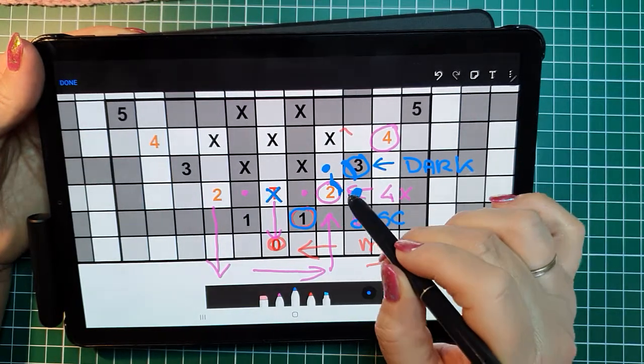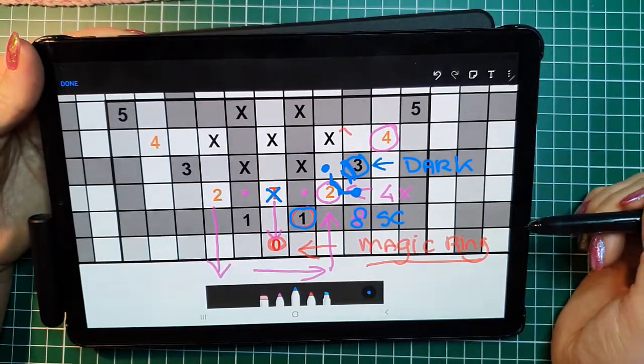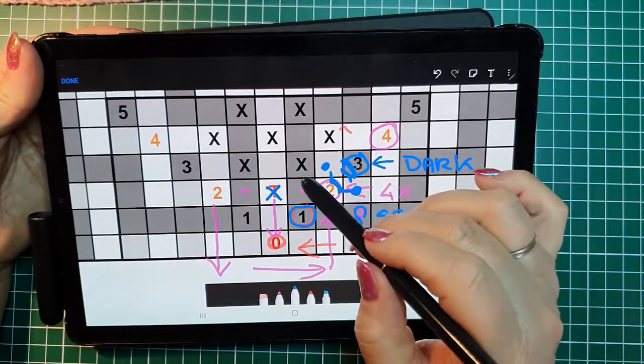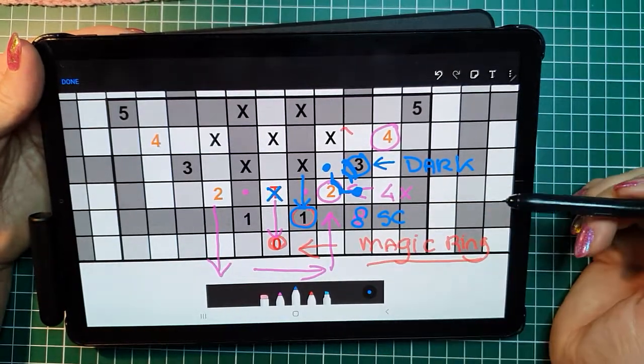So you get a single crochet in here, a single crochet in here. And here is your chain. I hope that makes sense. And then you follow the pattern.